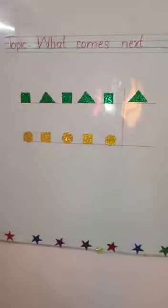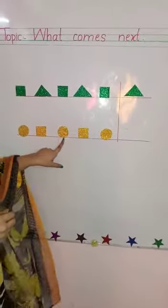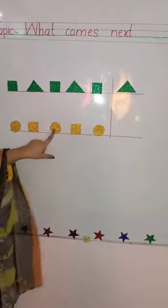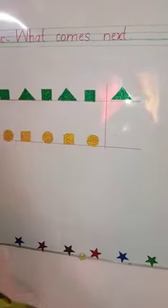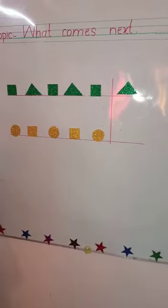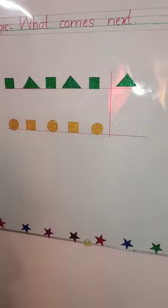Next, see the next pattern. Question number 2. We have a circle here, then a square, then a circle, then a square and then a circle. So what we have after the circle, we have a square. So what we will do, you will draw and I will paste a square here.